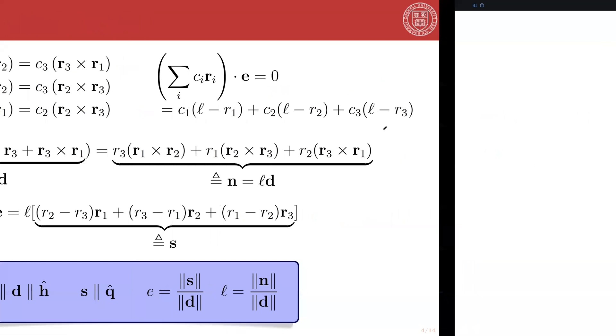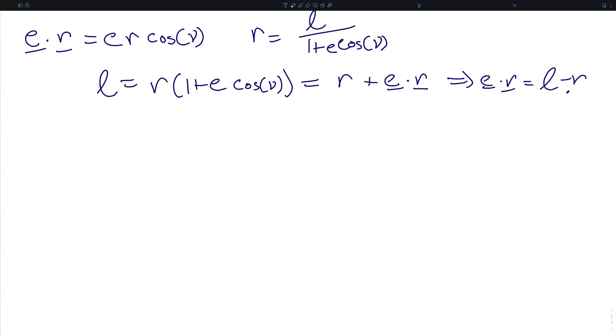Let's see how. Recall that E dotted into R is equal to magnitude E magnitude R times the cosine of the angle between them. We also know that R can be written as the semi-latus rectum of the orbit divided by one plus E cosine of nu, where nu is the true anomaly. That means that if we solve for L, the semi-latus rectum is equal to the orbital radius magnitude plus E dotted into R, which leads to the observation E dotted into R is equal to L minus R.